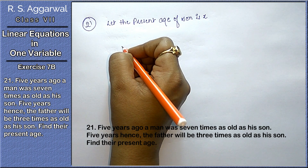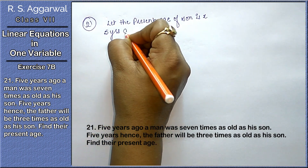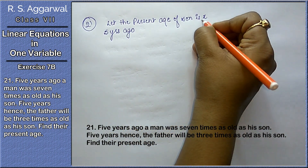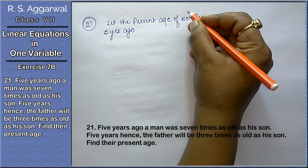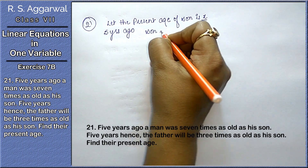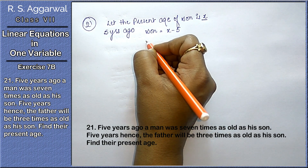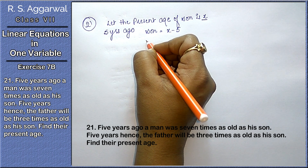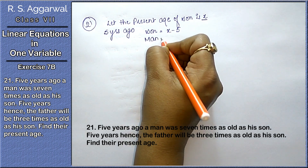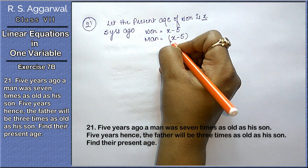5 years ago, if today's age is x, then 5 years ago the son's age would be x minus 5. And the man's (father's) age would have been 7 times (x minus 5).